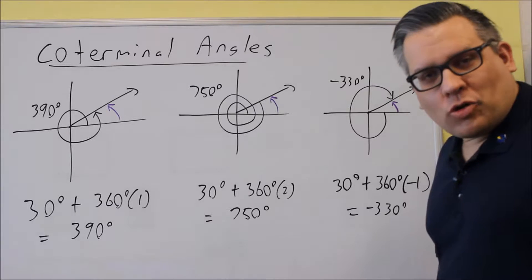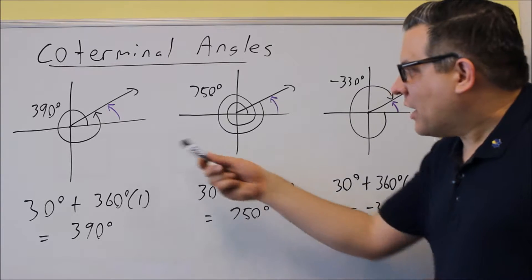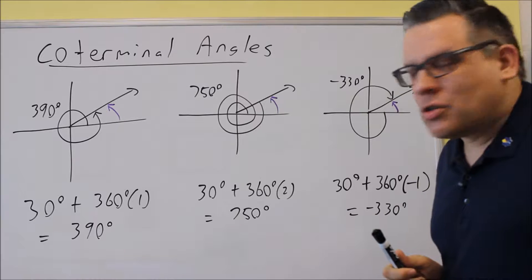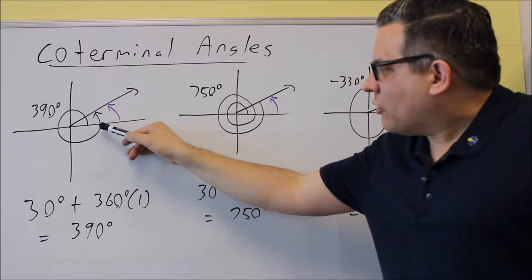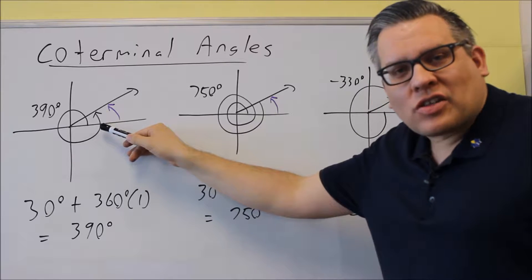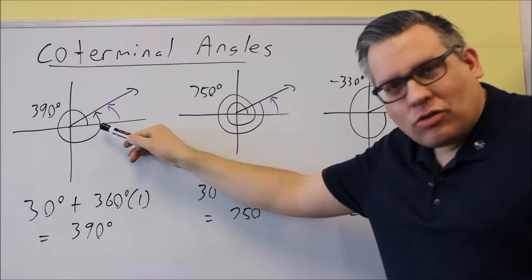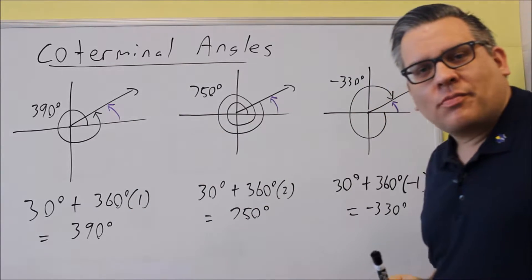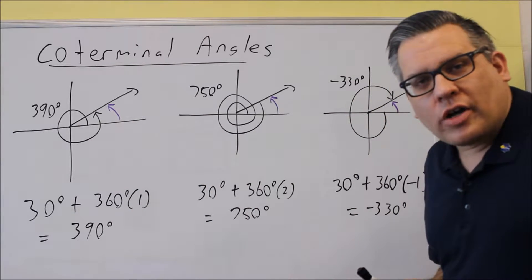Next we're going to talk about coterminal angles. We've already talked about how you draw angles in standard position. Angles will start with the positive x-axis. If it's a positive angle, we go counterclockwise, and if it's a negative angle, we go clockwise.